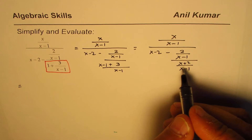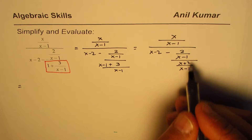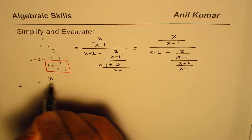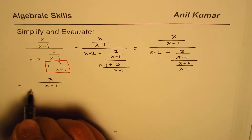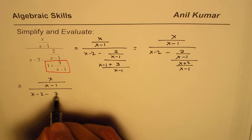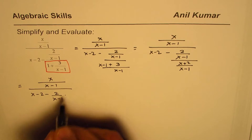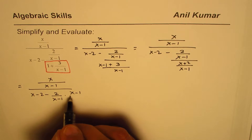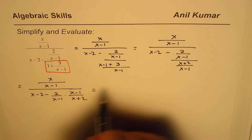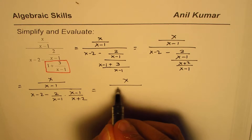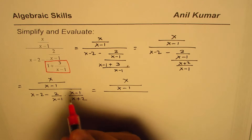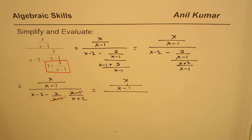This can be written as a product: x minus 1 over x plus 2. We rewrite to get x over x minus 1 divided by x minus 2, minus 2 over x minus 1, times x minus 1 over x plus 2. We can simplify x over x minus 1 — the x minus 1 cancels.